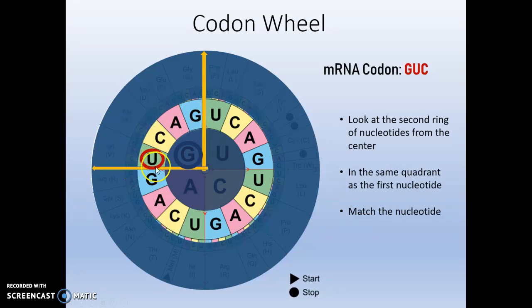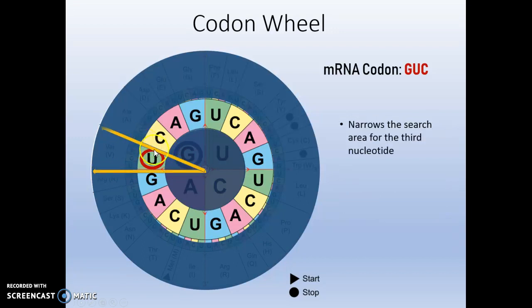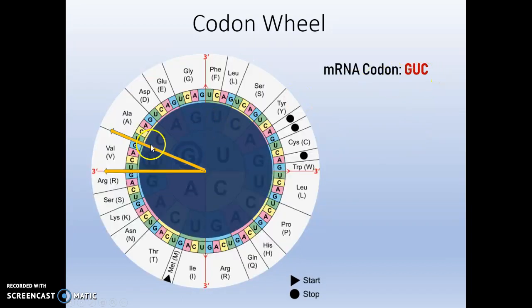Where U falls within these lines helps to narrow down where we look for our third base. And the third one being C will be in this last circle with nucleotide bases here. We found GUC, and when we follow that through, we see that the three-letter abbreviation for this is VAL. Another question that I've had is, which do I use? Do I use a three-letter abbreviation? Do I use the one letter? Do I need to do something with that single letter? No.